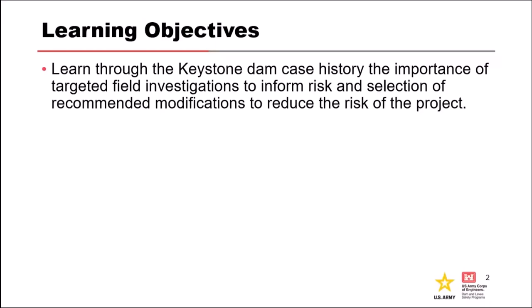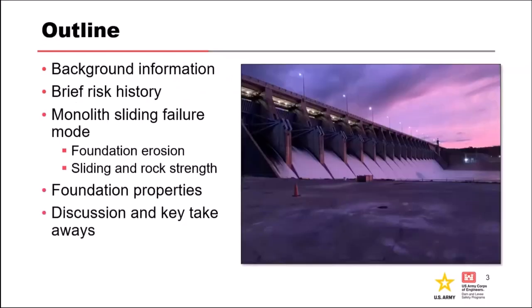So here are our learning objectives: learn through the Keystone Dam case history, which is sort of a case history mixed with site characterization. Through that case history, we'll cover the importance of targeted field investigations to inform risk and selection of recommended modifications to reduce the risk on the project. We'll go through some background, a brief risk history to explain how we got to where we're at, the monolith sliding failure mode, foundation erosion nodes, and then maybe some key takeaways and discussion.